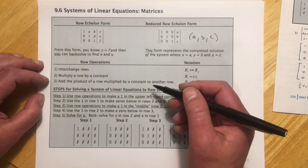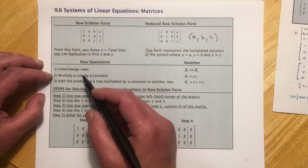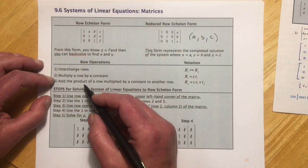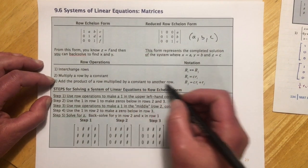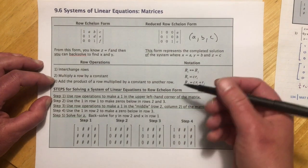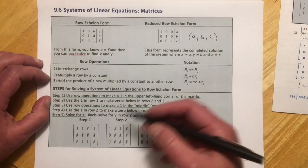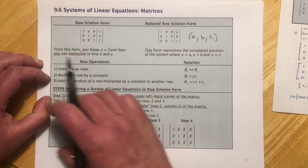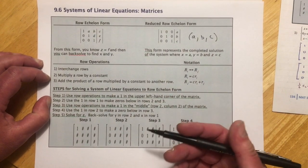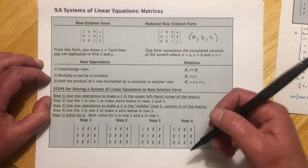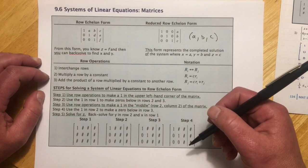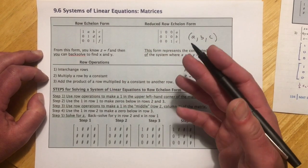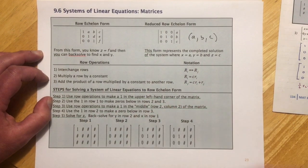So we have the same row operations that we had for when we did them with the variables intact a couple sections ago. We can interchange rows, we can multiply a row by a constant, and we can add basically two rows together to make a new row. So our steps for doing these are, and this is sort of a general approach. Sometimes this isn't the easiest thing to do, but this is generally a good plan unless you see something better. But it's a place to start from at least.